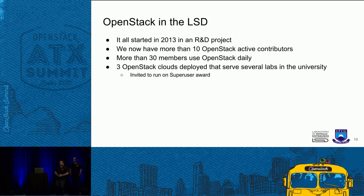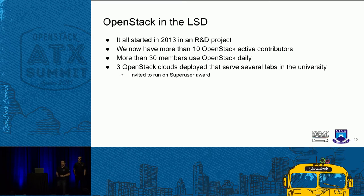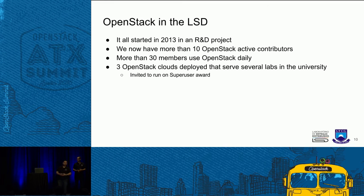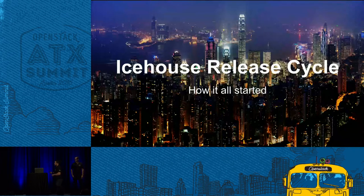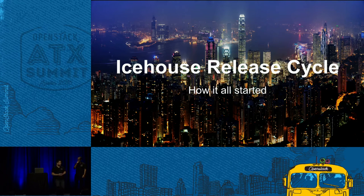This journey of ours began with simple issues creating DevStack, and now we have three OpenStack production clouds that serve a big amount of labs at our university. This year, we've even been invited to run at the Super User Award, as you may have seen on the keynotes this morning. This all started in the Icehouse release cycle.